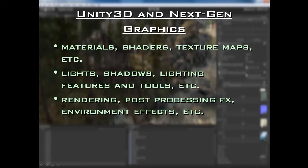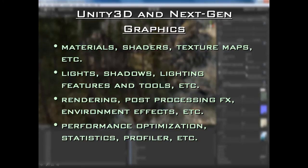We are also going to be looking at rendering, post-processing effects, and environment effects. Then finally we are going to talk about performance optimization. We are going to use tools like the statistics window and the profiler to optimize our game. If your game looks fantastic but runs in slow motion at say 10 FPS, no player is going to want to play it. So we are going to learn optimization techniques specific to the Unity 3 engine and use different tools to optimize our next-gen environments, finding a nice balance between the work looking really high quality but also running rock steady at a very fast, smooth frame rate.